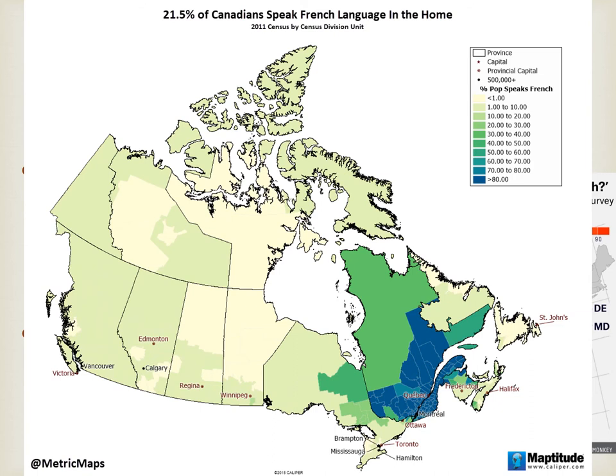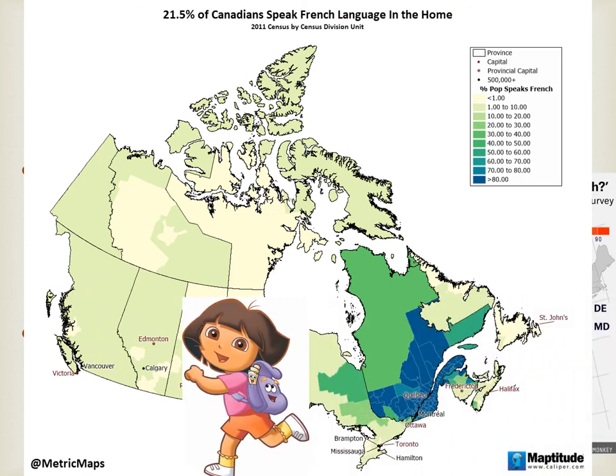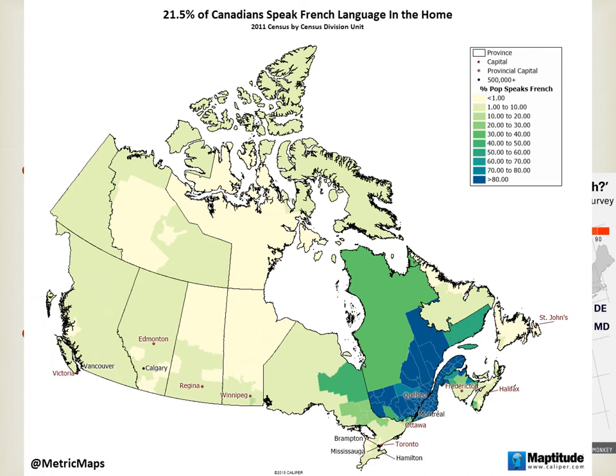But before we go — what type of map is that, and at what scale? It's a choropleth map at the sub-national scale. They're called provinces and territories in Canada.